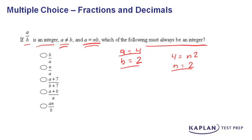If we start with answer choice A, and if b is two and a is four, answer choice A is not an integer. We want to find the answer choice that must always be an integer so we can eliminate the ones that aren't an integer. In this case, answer choice A is gone.